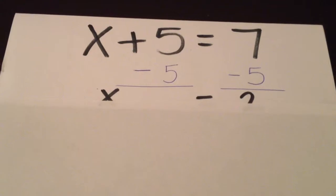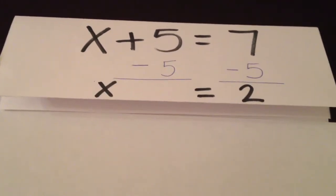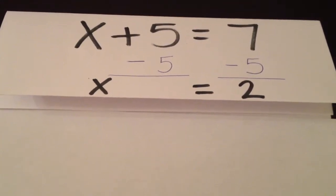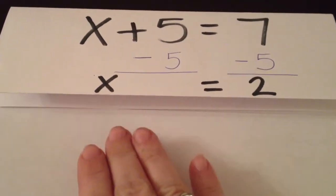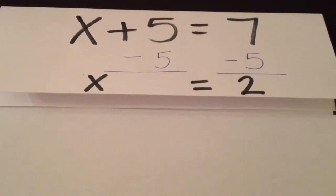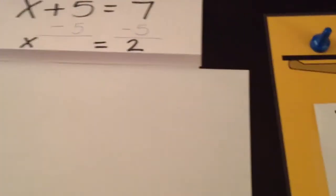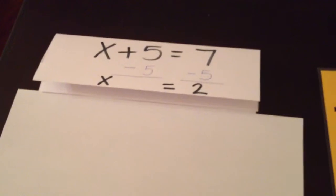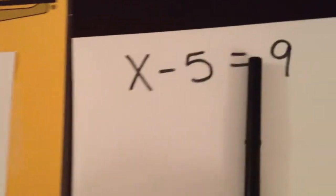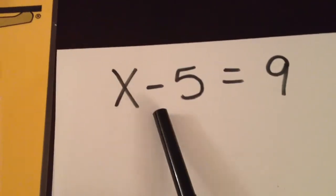And then we're left with x plus 5 minus 5, which cancels out because we took away that 5 that was there. And we're left with simply x, which equals 2. Because those cancel out, the plus 5 minus 5, they're opposites.